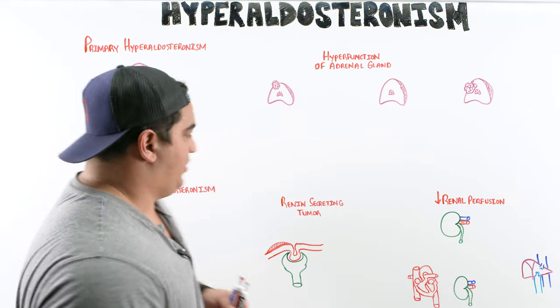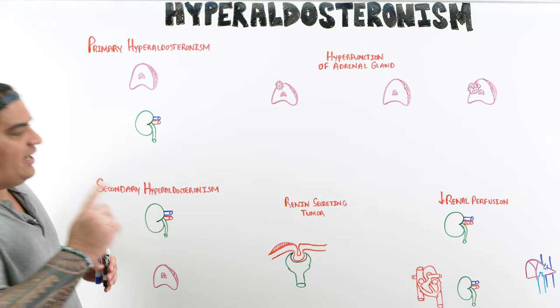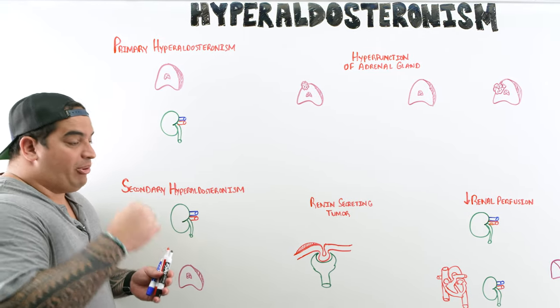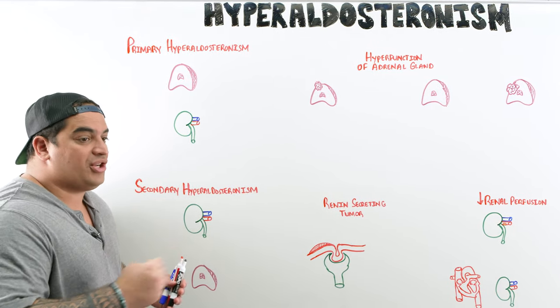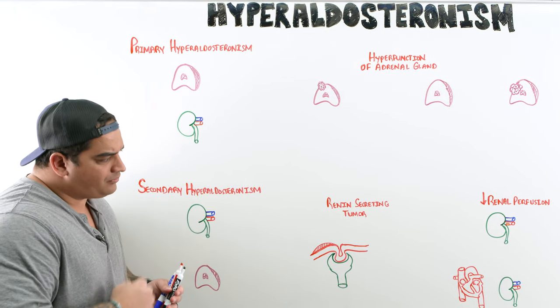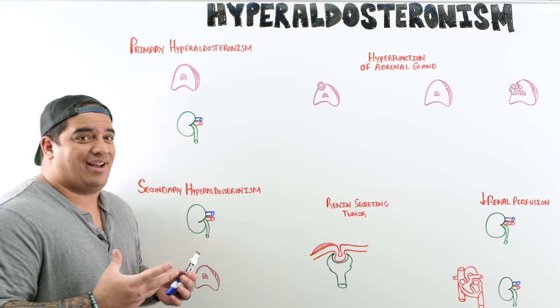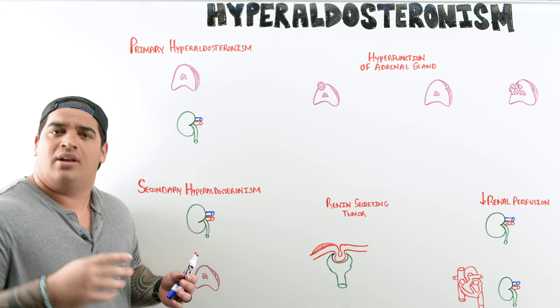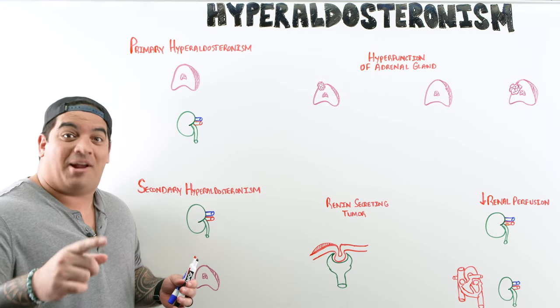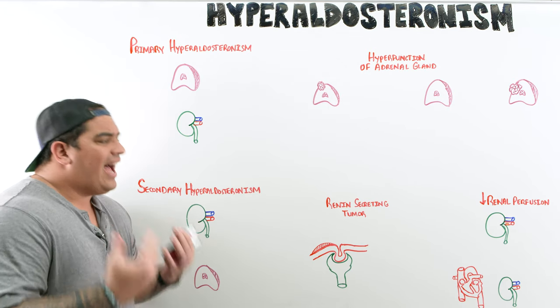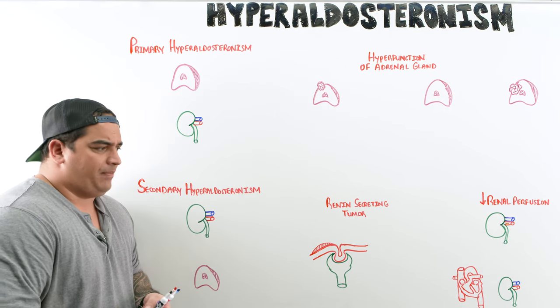Let's start talking about hyperaldosteronism. This is a condition in which you're producing too much aldosterone. Kind of the opposite to this is adrenal insufficiency, particularly primary adrenal insufficiency, where there's hypoaldosteronism.